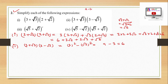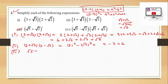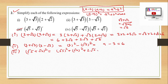We used the identity (a − b)(a + b) = a² − b². Next, for Part 3: (√5 + √2)² using the identity (a + b)² = a² + b² + 2ab. So it equals (√5)² + (√2)² + 2√5·√2 = 5 + 2 + 2√10 = 7 + 2√10.